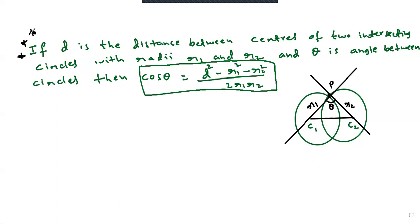Find D, distance between C1 and C2. Length D, r1, r2 square. Then substitute in the formula and finish. Very important formula. Formula based questions will be there guaranteed. Thank you.